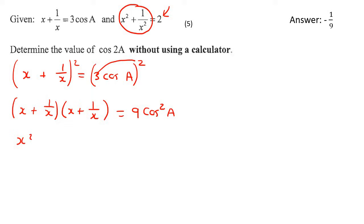So then we're going to get x squared plus 1 plus 1 plus 1 over x squared. Remember, I showed you guys that just now, equals to 9 cos squared a. And then we're going to say x squared plus 2 plus 1 over x squared is equal to 9 cos squared a. And then x squared plus 1 over x squared equals to 9. Whoops, I forgot the 2.